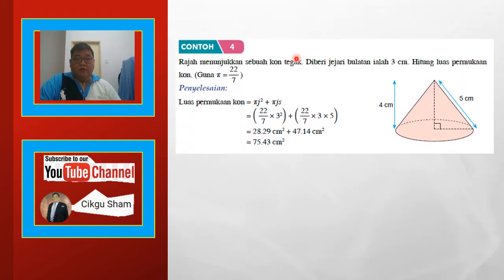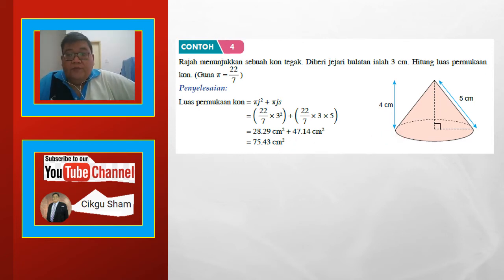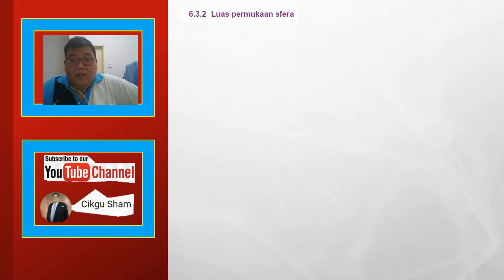Contoh 4: Rajah menunjukkan sebuah kon tegak. Kita ada tinggi tegak dia daripada puncak ke bawah dan sendeng dia s = 5. Hitung luas permukaan kon, guna pi = 22/7. Formula kon kena ingat — luas permukaan kon: πj² tambah πjs. Masuk je: pi = 22/7, j = 3, s = 5. Selesaikan, dapat 75.43.